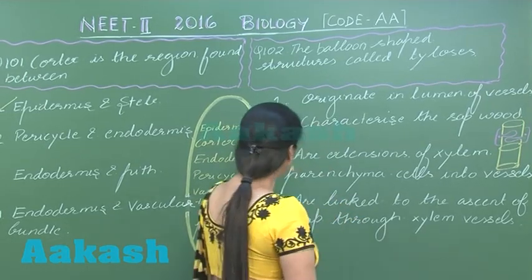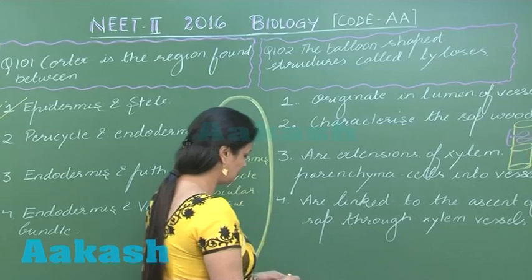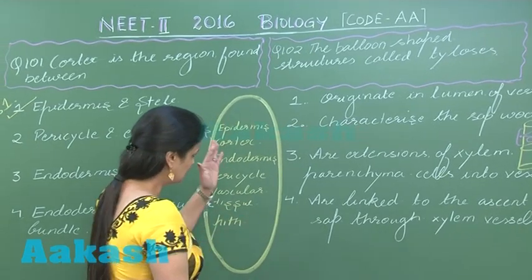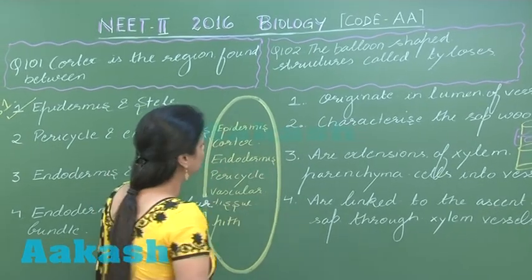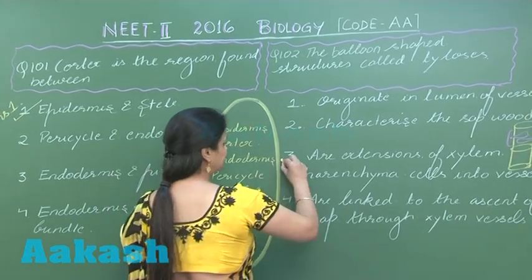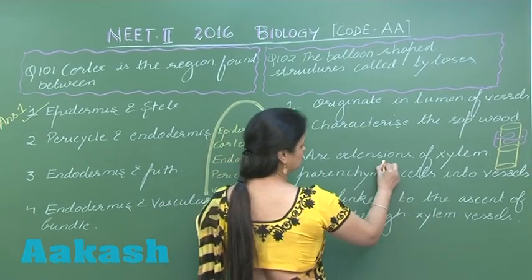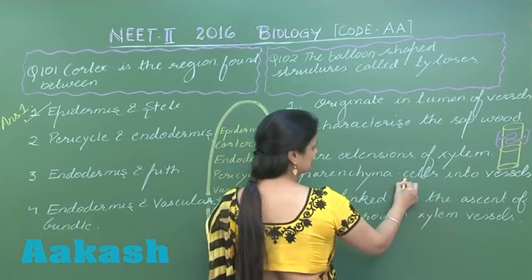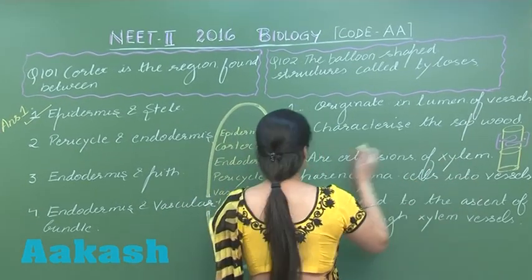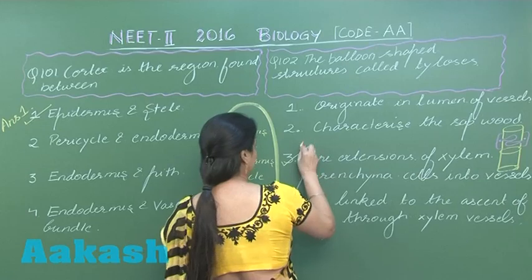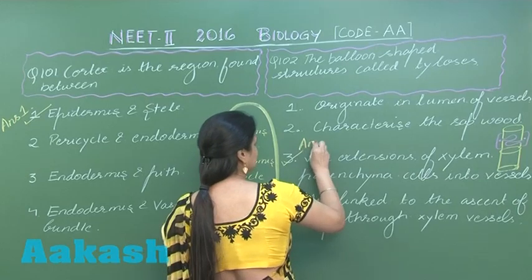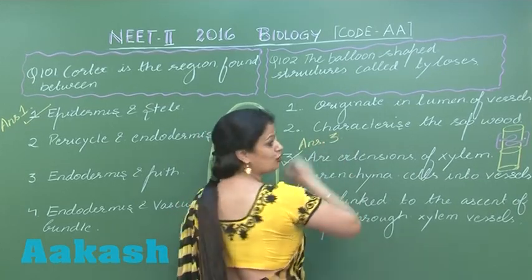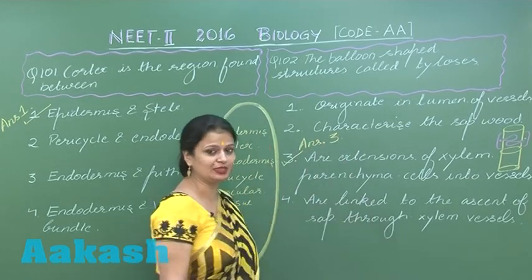Looking for the right option: Tylosis are extensions of xylem parenchyma cells into the vessel. So the right answer for this question is option number three.